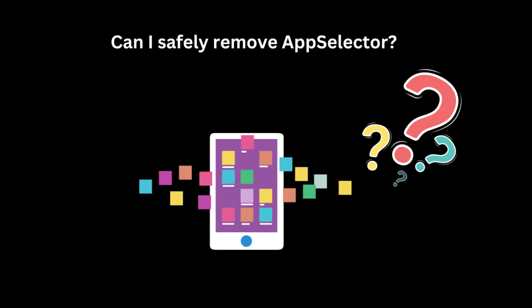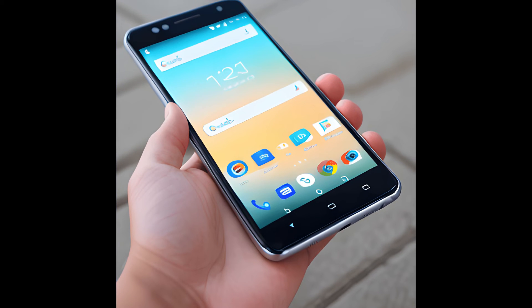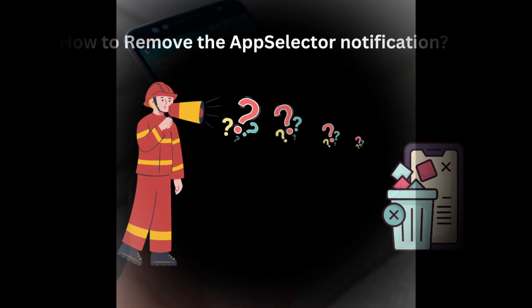Can I safely remove AppSelector? If you utilized AppSelector while setting up your phone, you might be concerned that uninstalling it could lead to problems with the device and the apps installed through it. However, there's no need to worry, as removing AppSelector won't make the apps downloaded through it unusable. It is indeed safe to uninstall AppSelector from your device, particularly if you no longer require it.